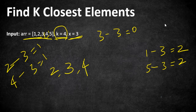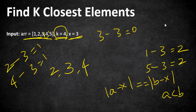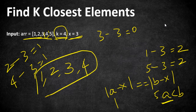There is a condition in the problem statement: if the difference between a and x equals the difference between b and x, we must choose the smaller number. Since a is less than b, we choose a. Here a is one and b is five — though the differences are equal, we choose the lesser value. So one enters our result set and our final result is 1, 2, 3, 4.